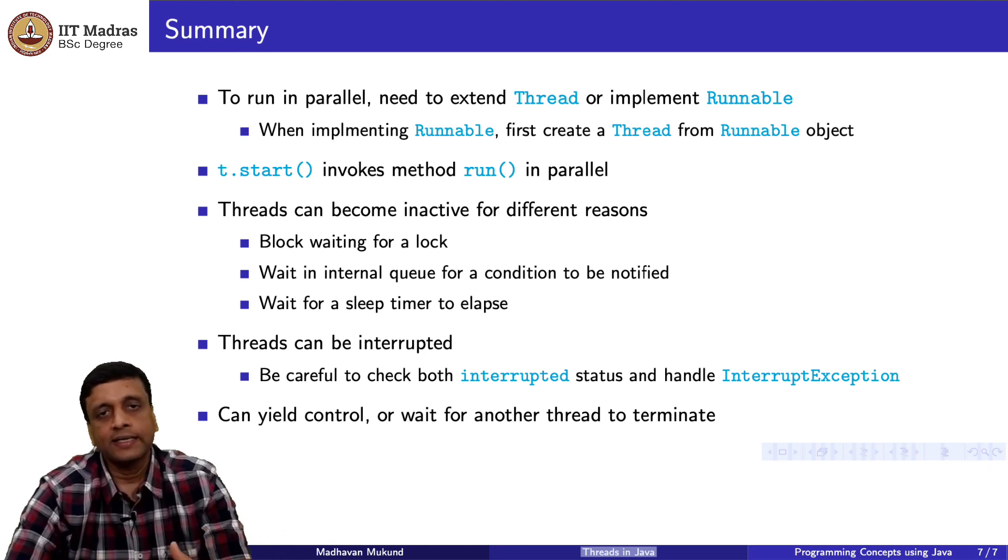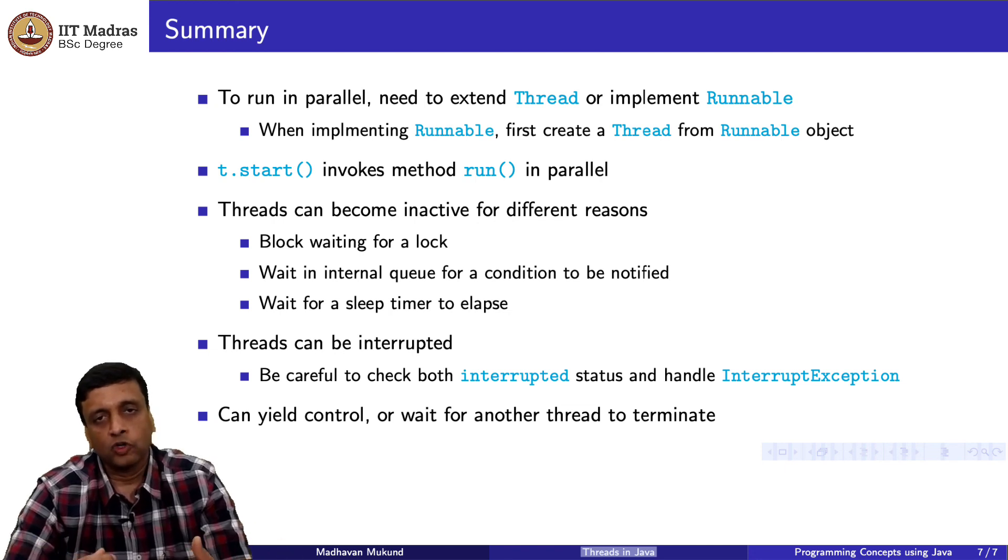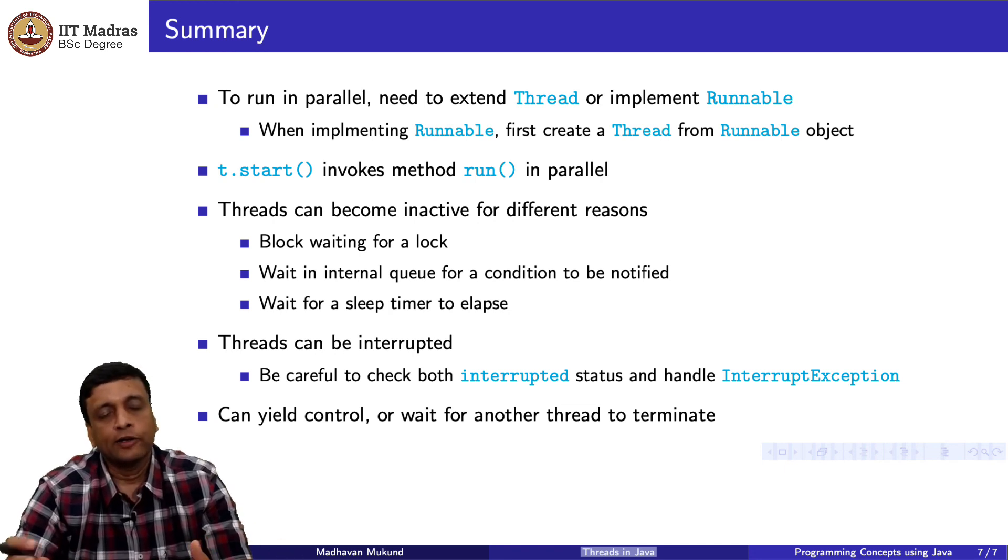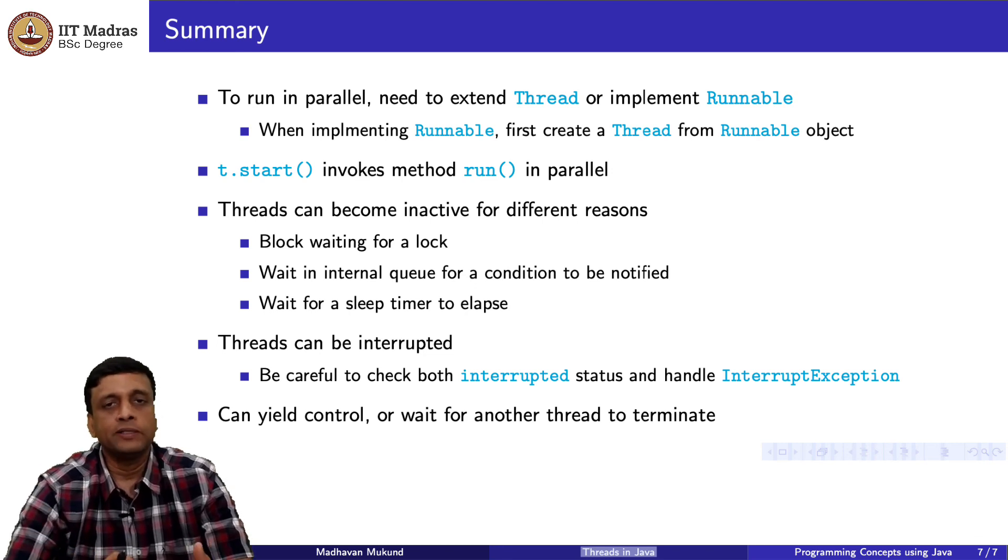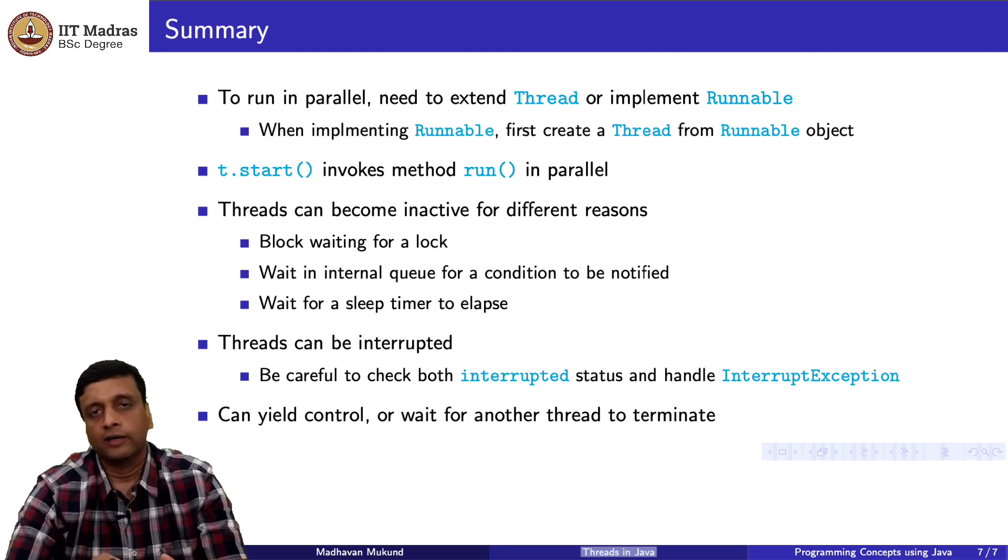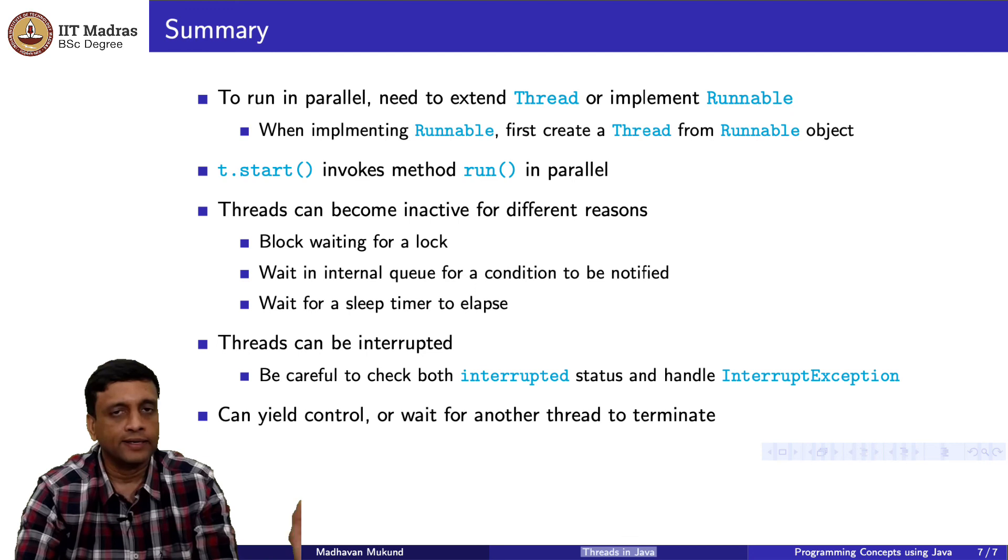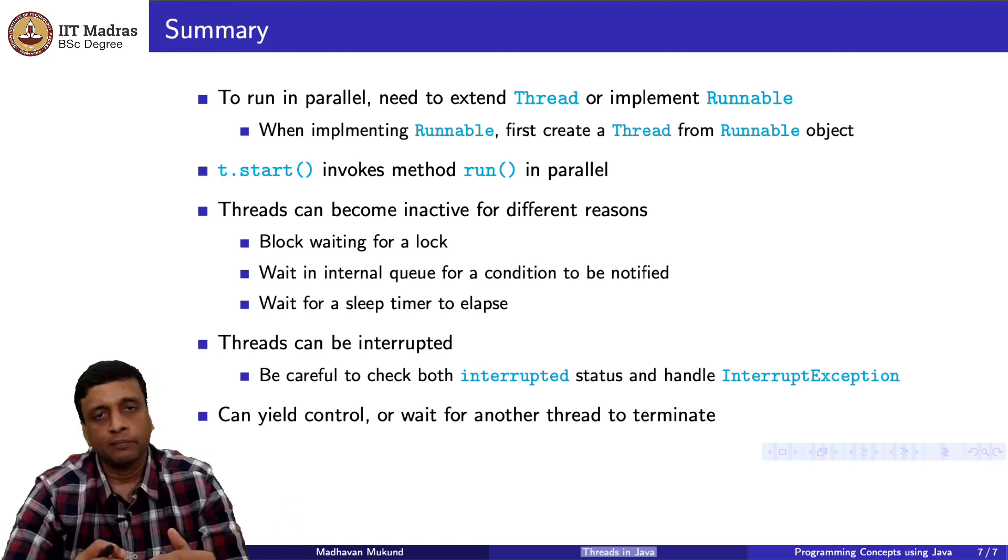And the other thing you can do is you can send a signal to another thread. A thread must be able to receive the signal. It can check its interrupted status or it can catch an interrupted exception. And finally, you can yield control by saying, I want to stop running temporarily and let some other thread take over. And you can also join with another thread which means you can specify that you want to wait until another thread is completed before you proceed. This is a block. Like you are saying that now I want all my concurrent threads to again synchronize and proceed only after everything that is pending is finished.